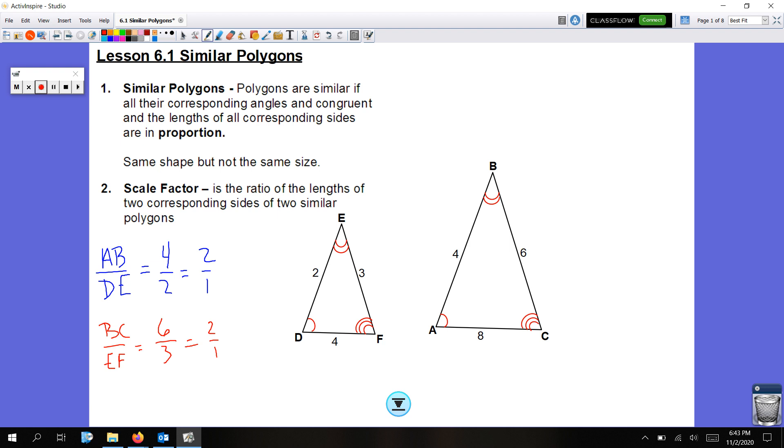I need to check all the other remaining sides. So the next side, I'm going to pick BC. BC corresponds with EF. BC is 6, EF is 3. 6 over 3 is 2 over 1. One more side to go before I can say for sure that these two triangles are similar. The last side is AC over DF. AC is 8, DF is 4. 8 over 4 is 2. So the scale factor on all three sides is 2 over 1, 2 to 1.